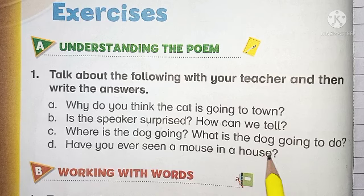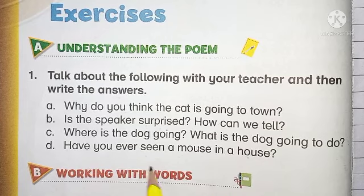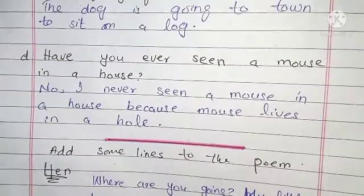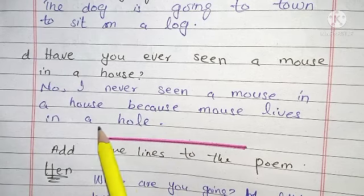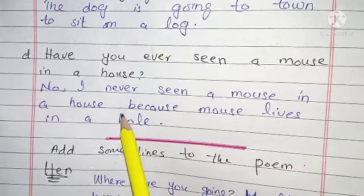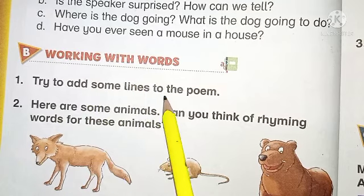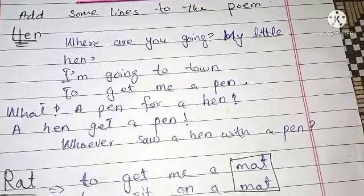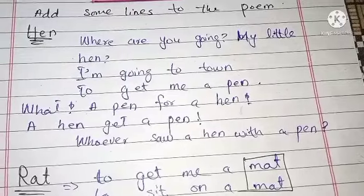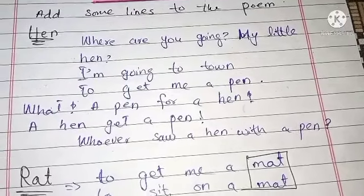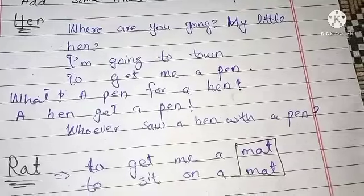Number D: Have you ever seen a mouse in a house? — کیا آپ نے کبھی ایک mouse کو گھر میں رہتے ہوئے دیکھا ہے. No, I have never seen a mouse in a house because a mouse lives in a hole — mouse ہمیشہ اپنے بل میں رہتے ہیں. Working with words, number one — try to add some lines to the poem: 'Where are you going, my little hen? I am going to town to get me a pen. What a pen for a hen! A hen get a pen? Whoever saw a hen with a pen?'